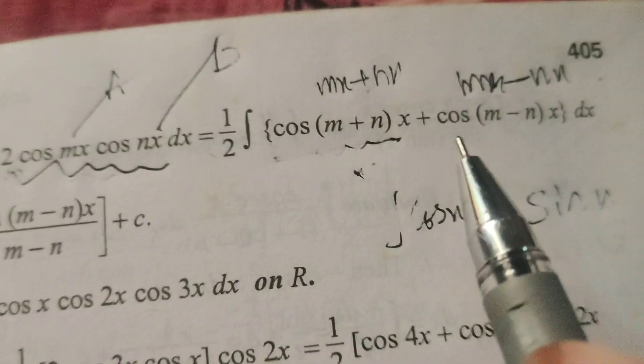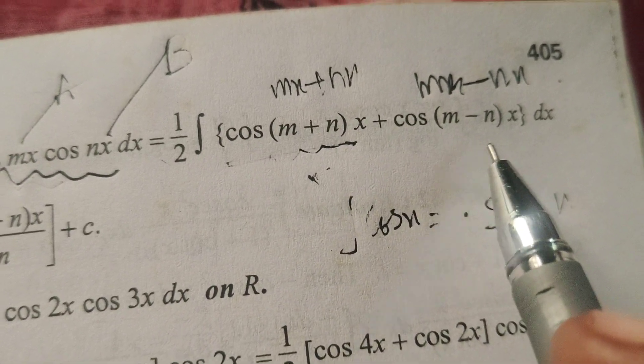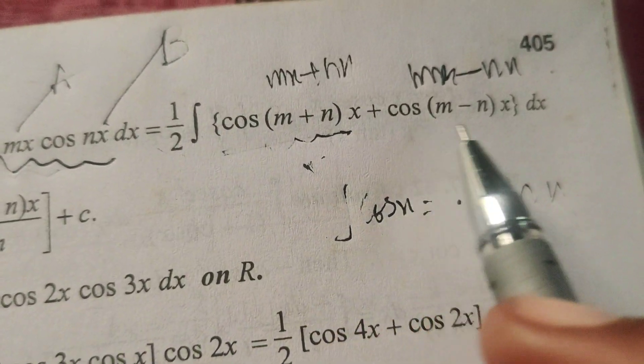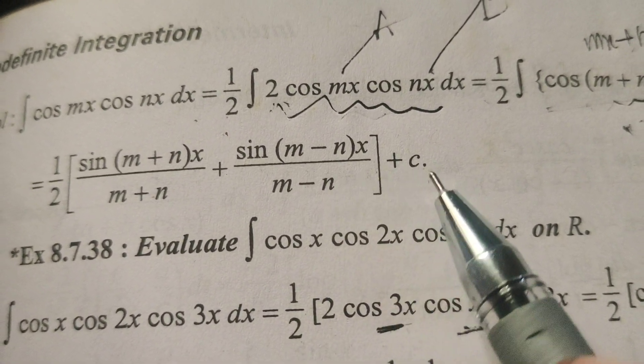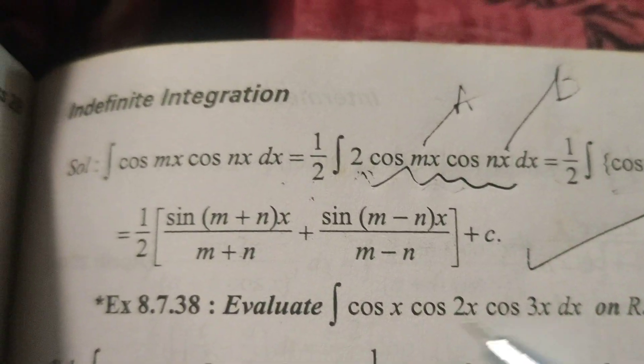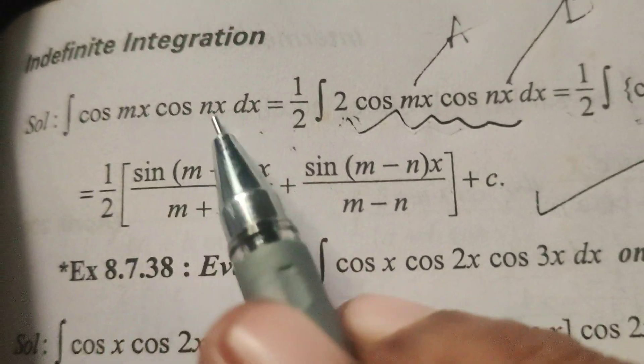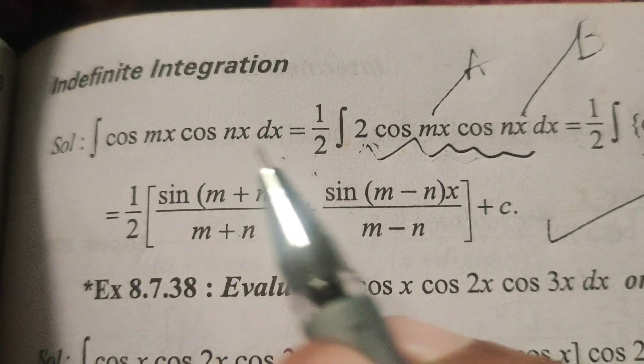Plus here also cos of m minus n into x. Integration of cos of m minus n into x means sin of m minus n into x divided by m minus n plus c. This is the solution for the given problem. Evaluated integral. Okay.